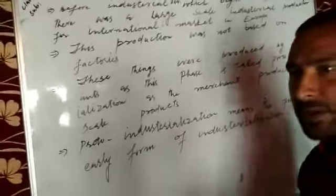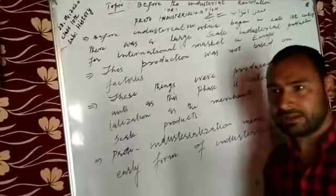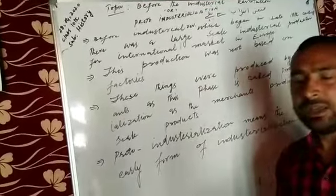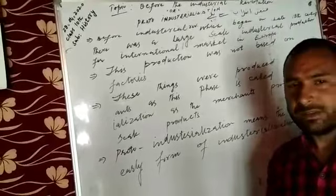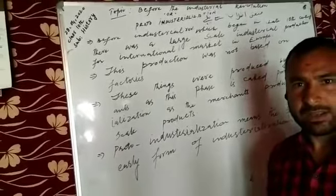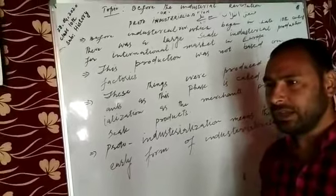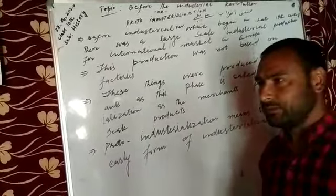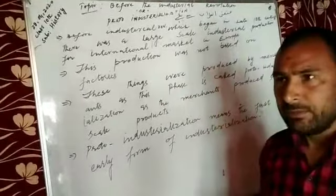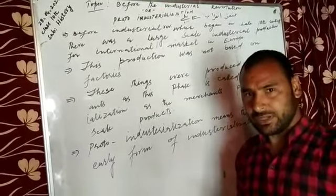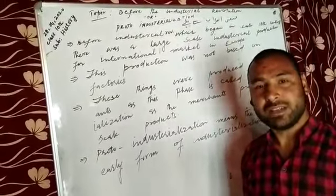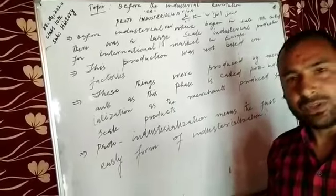Let me recap the last lecture. What is called the Industrial Revolution? When a machine takes the place of a person — if a person was preparing products on a small scale, machines can prepare products on a large scale. This process is called Industrialization.